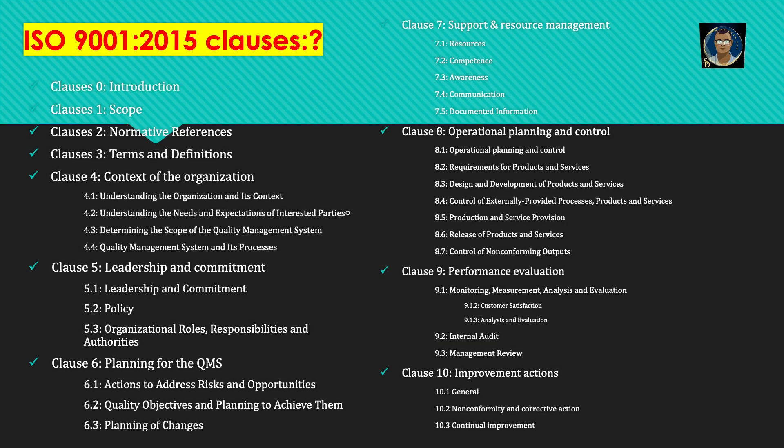ISO 9001:2015 — what are the clauses? There are 10 clauses. Clause 0 is introduction, clause 1 is normative references, clause 2 is terms and definitions. From clause 4, the actual content starts: context of the organization, with four sub-clauses — 4.1 understanding the organization and its context; 4.2 understanding the needs and expectations of interested parties; 4.3 determining the scope of the quality management system; 4.4 quality management system and its processes.